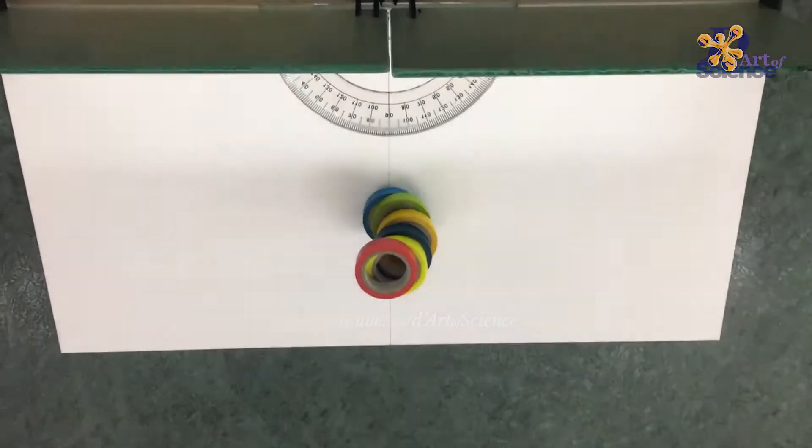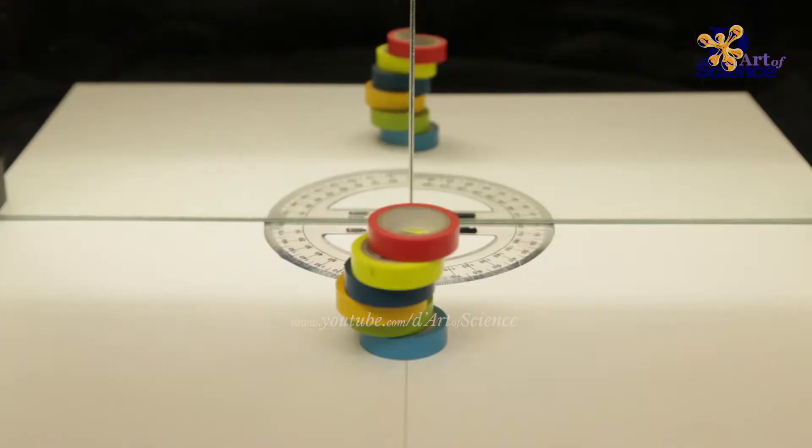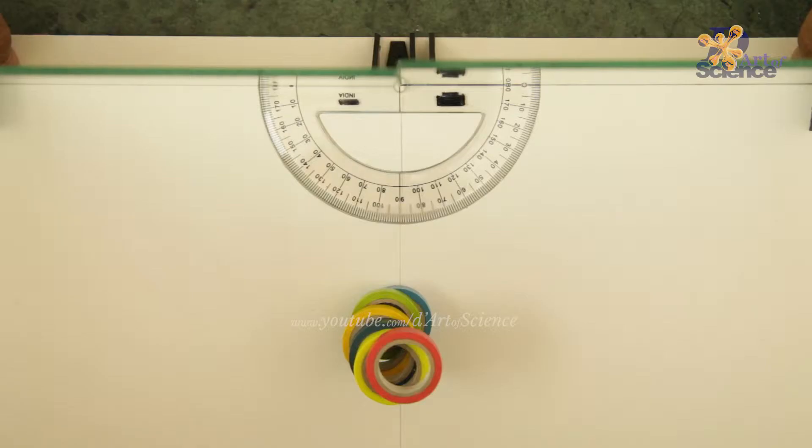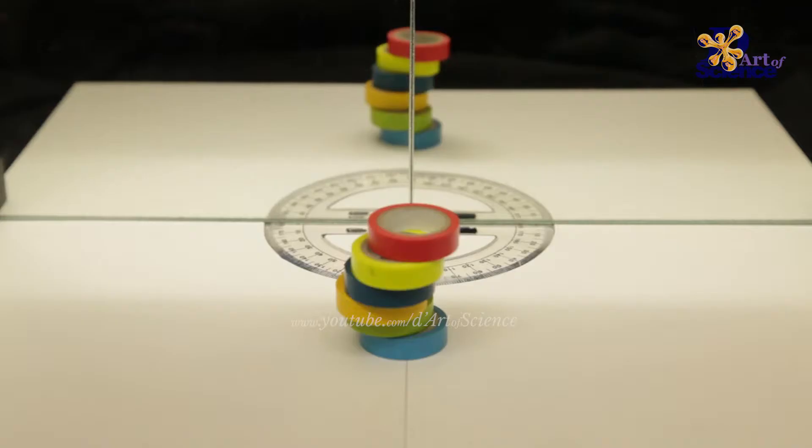When two mirrors are kept at an angle to each other, then they can form multiple images of an object through multiple reflections and you would have seen it in many trial rooms of clothing stores. Let's try this with two mirrors and one object in the middle. We'll start with both mirrors in a line or at 180 degrees to each other.